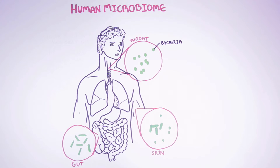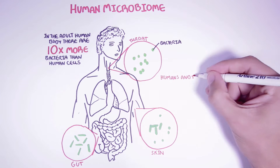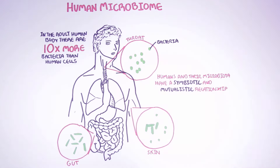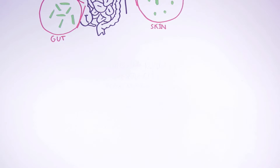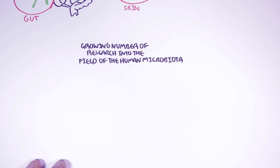In a healthy adult human body, there are approximately 10 times more bacteria than there are human cells. Humans and their microbiota — which is bacteria — have a symbiotic and mutualistic relationship, which means that humans and the bacteria work together, benefit from each other, and depend on each other for survival. There is a growing number of research into the field of the human microbiota, such as the association between the gut microbiota and our health, with new insights emerging rapidly.